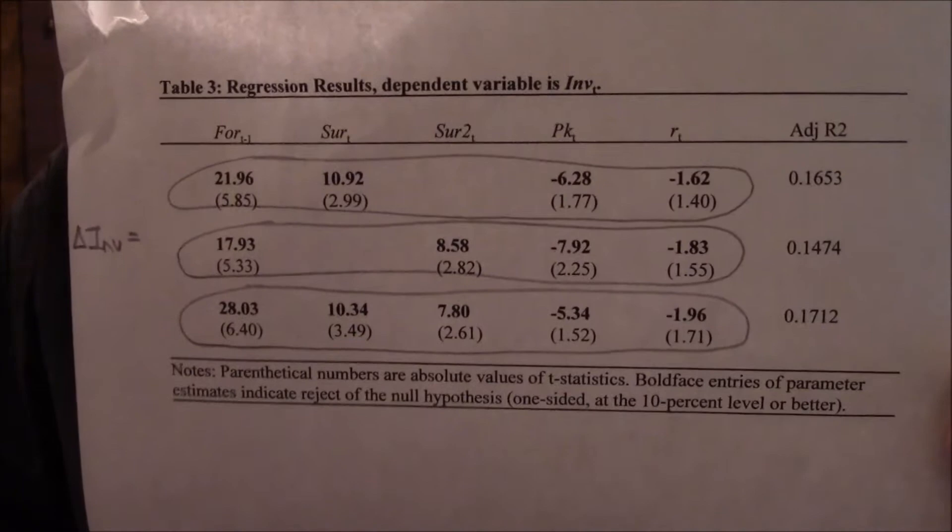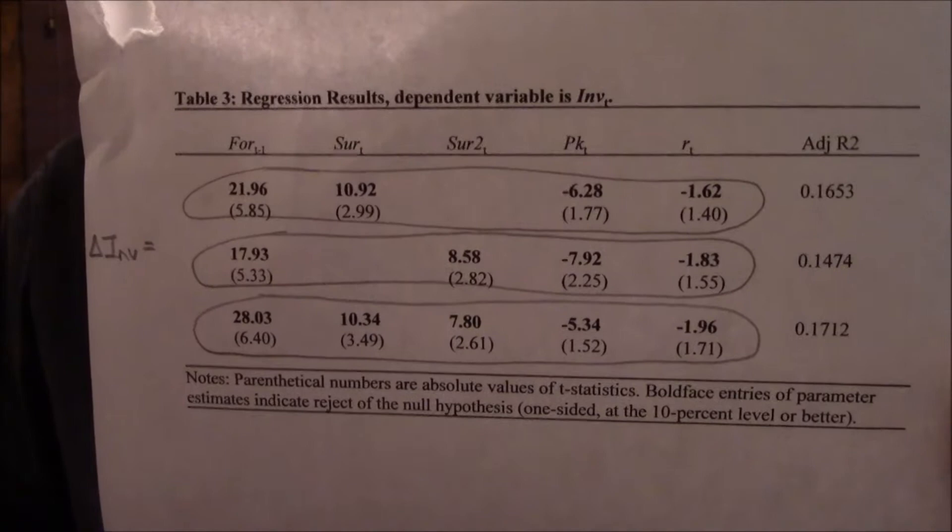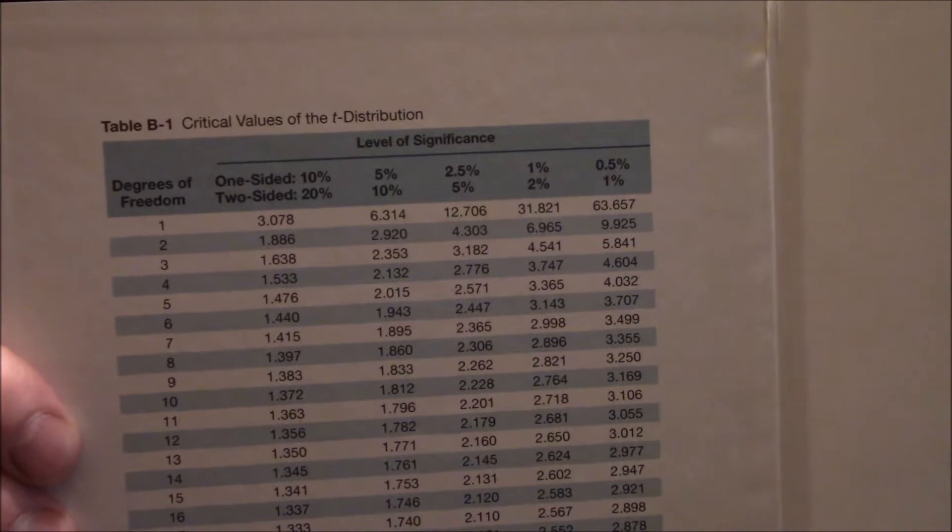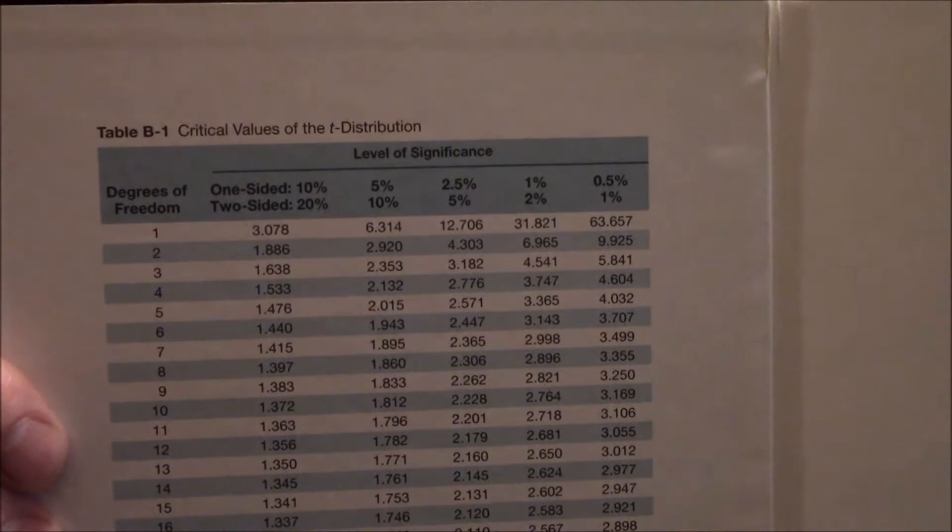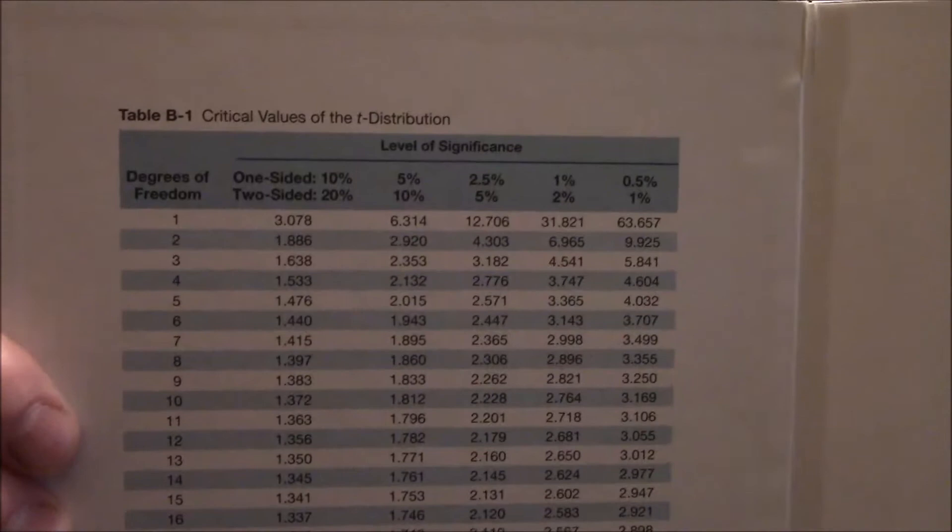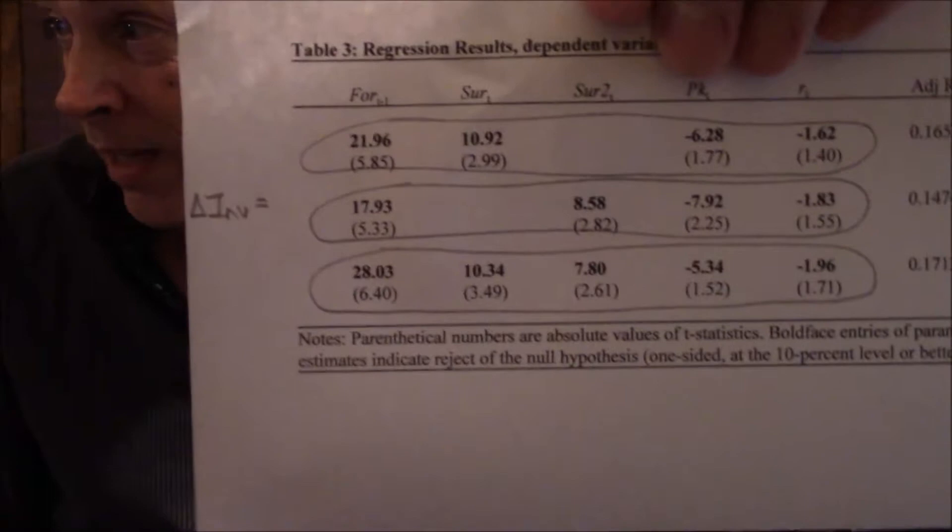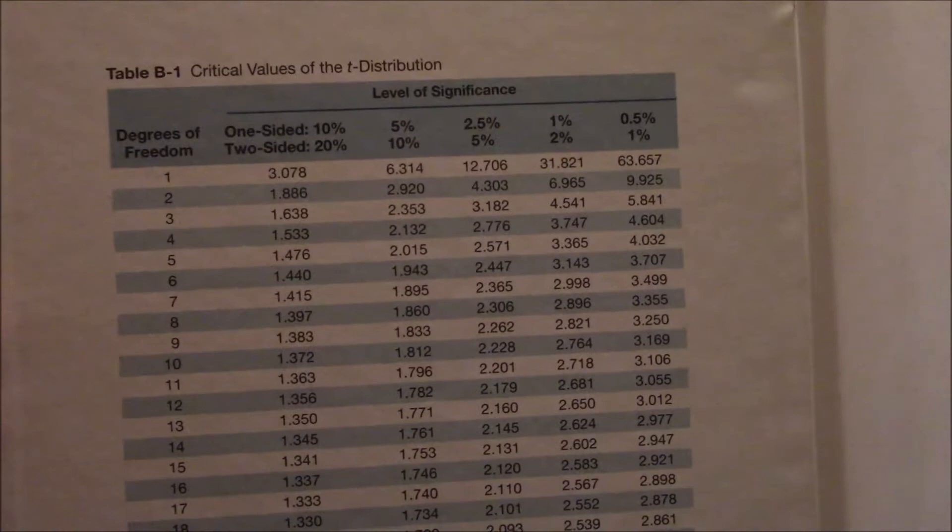Let's look at just the bottom one that includes all of them. 6.4 is the T-score on that F-O-R variable that's going to tell us whether or not it's statistically significant. Let's have a look at the table here in the book and see where 6.4 is going to show up. Well, I'm using the 10% level, one-sided, so that's that very first column. For crying out loud, six is going to be bigger than three, right? So it's going to pass a T-test at any level. Six is an extremely high T-score, which is why I was so excited about my results.